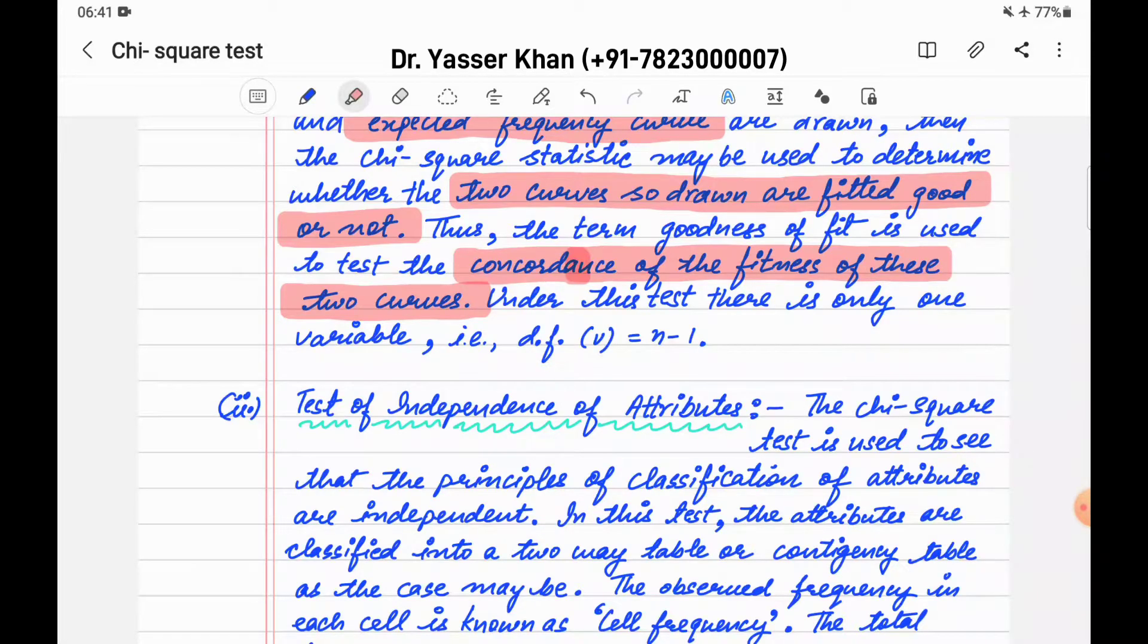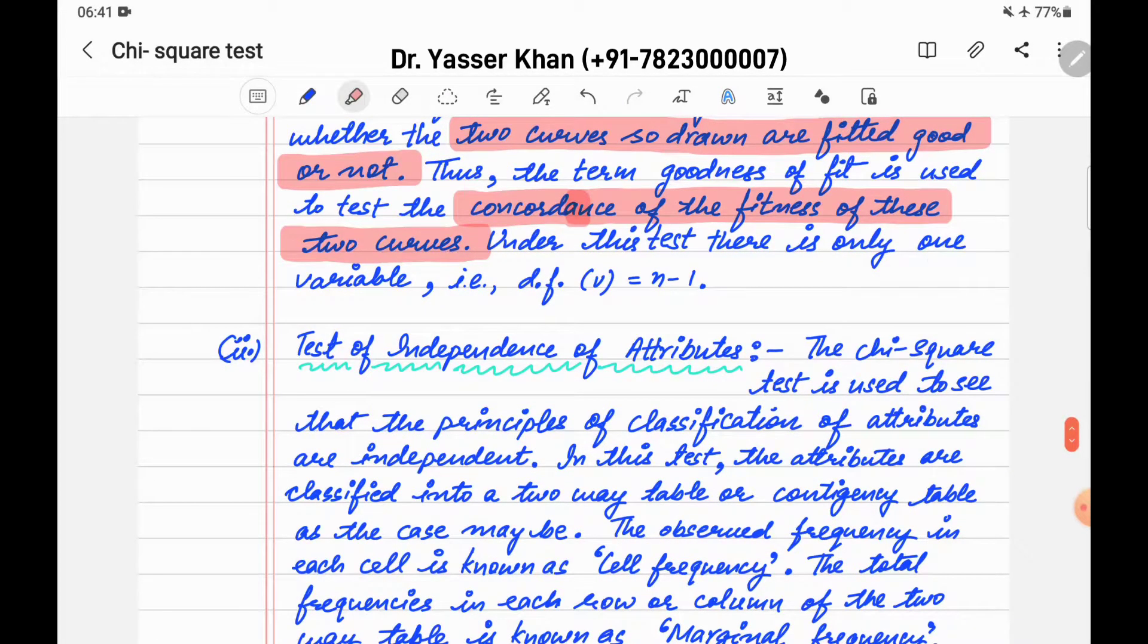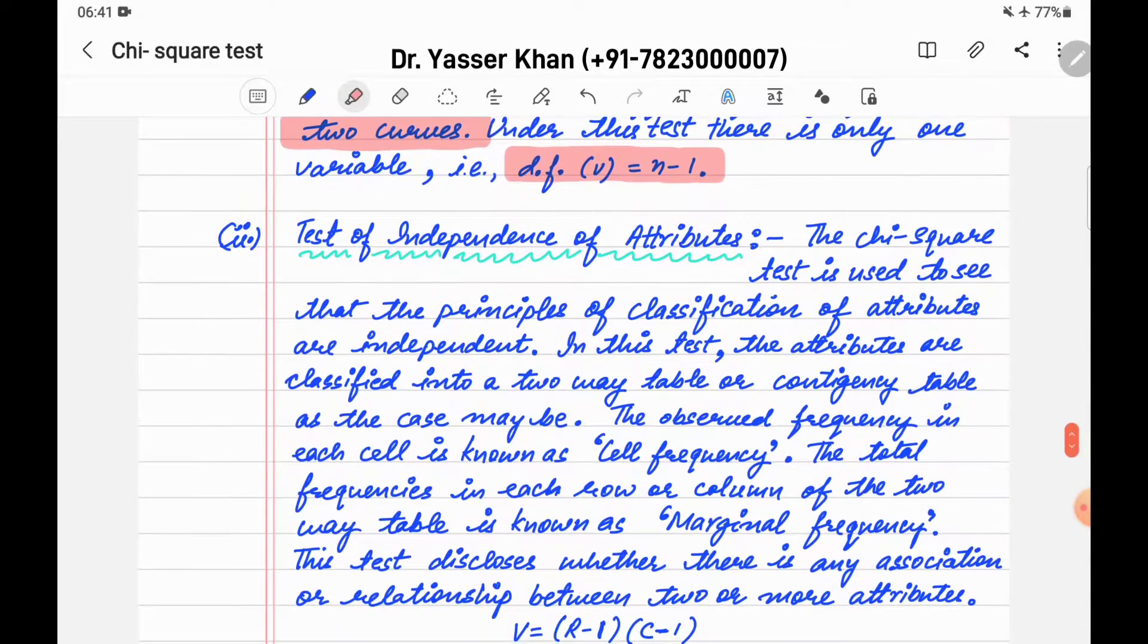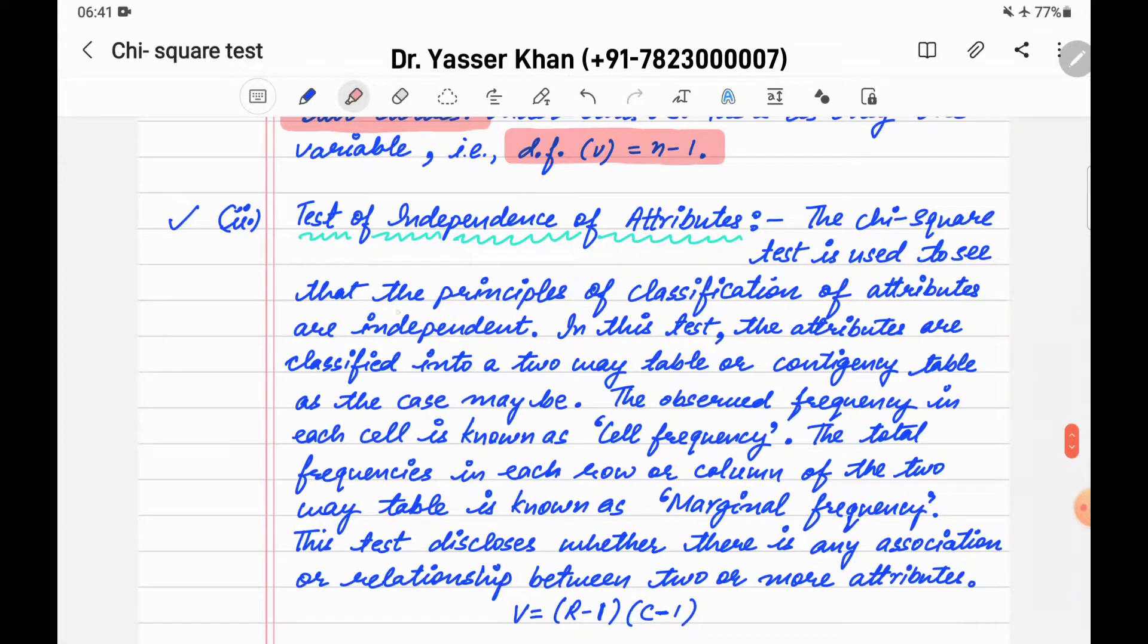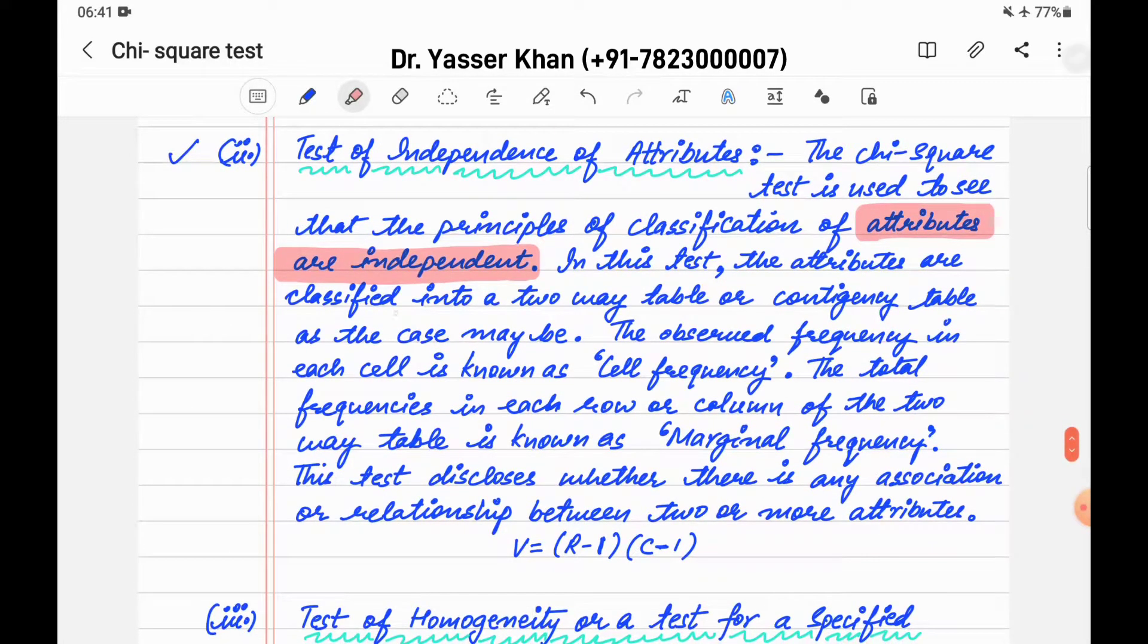Under this test there is only one variable, basically one variable, and its degree of freedom is n-1. Now let's go to the second point: what is the test of independence of attributes? This is basically the contingency table. The attributes are classified into a two-way table.